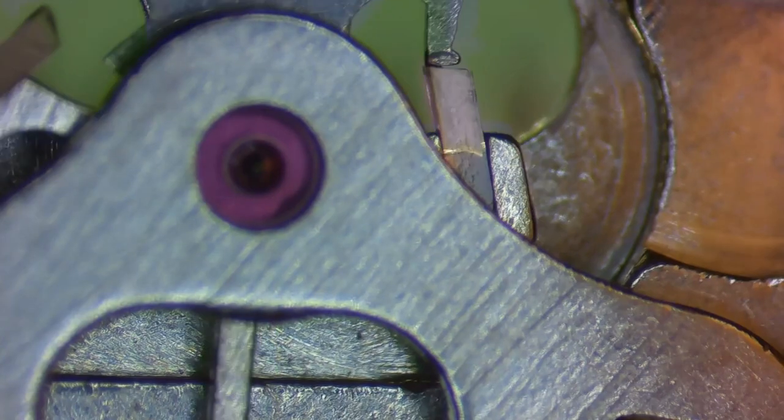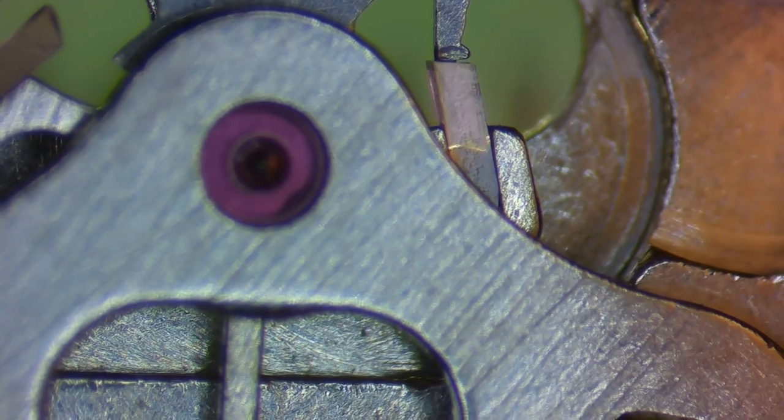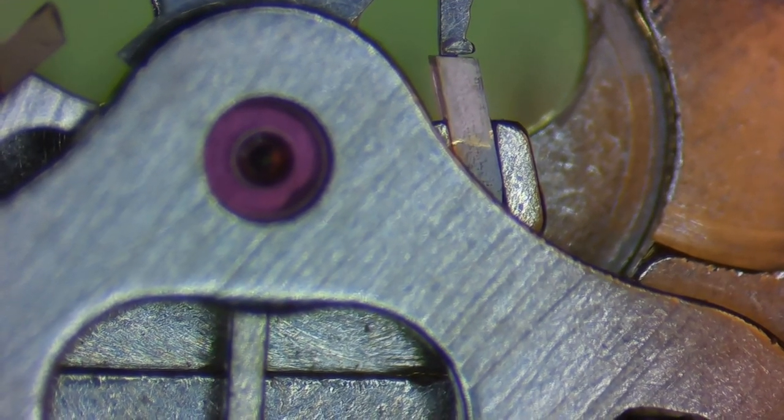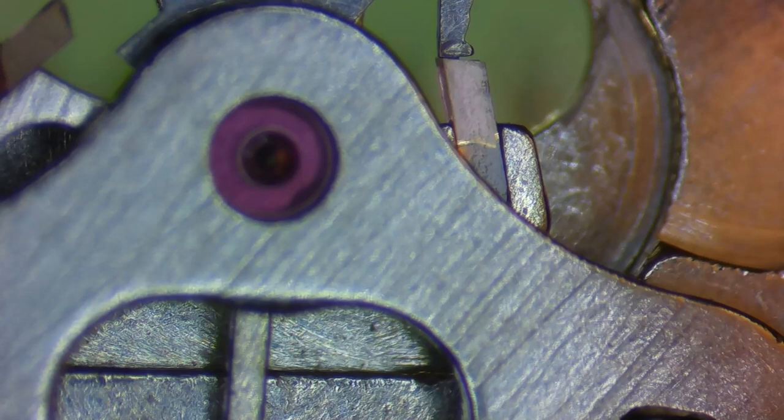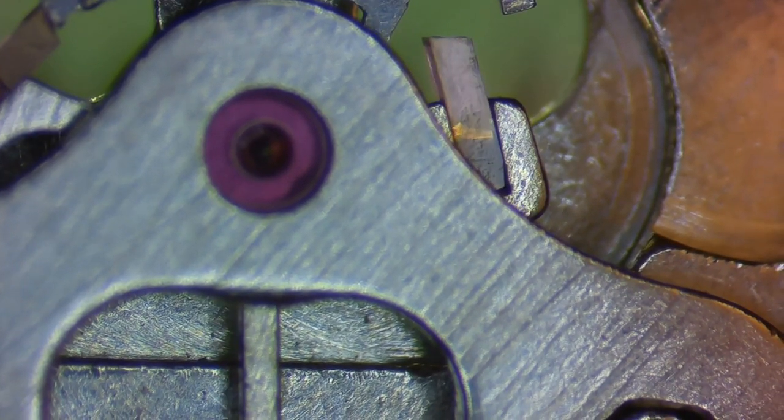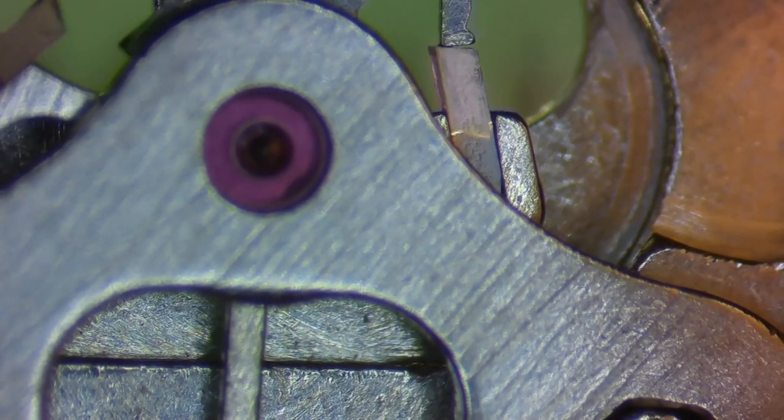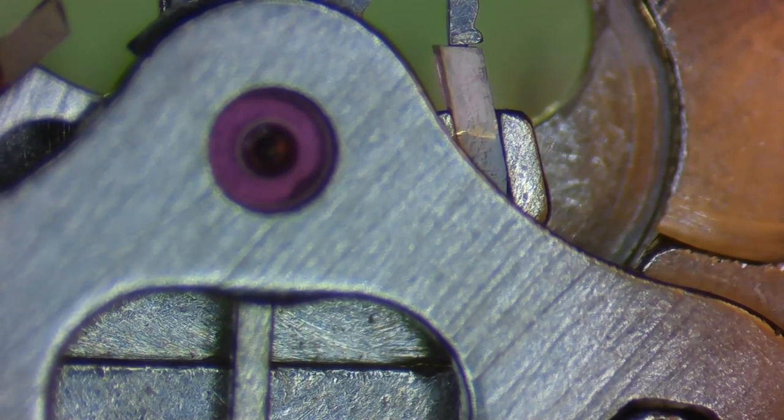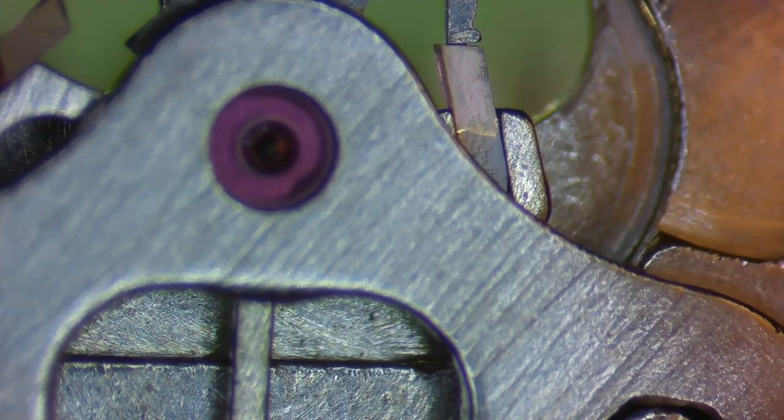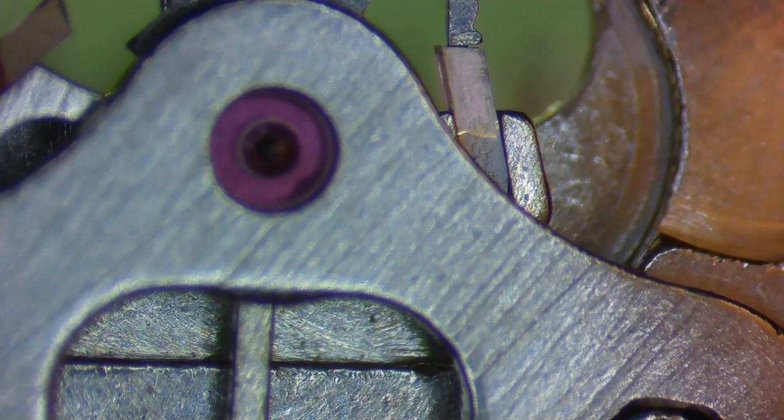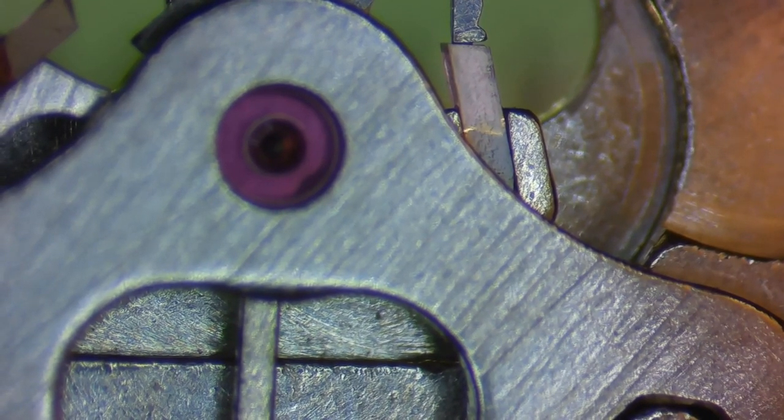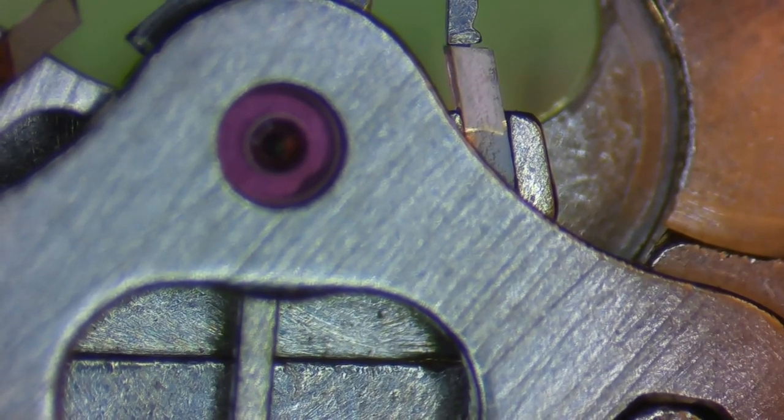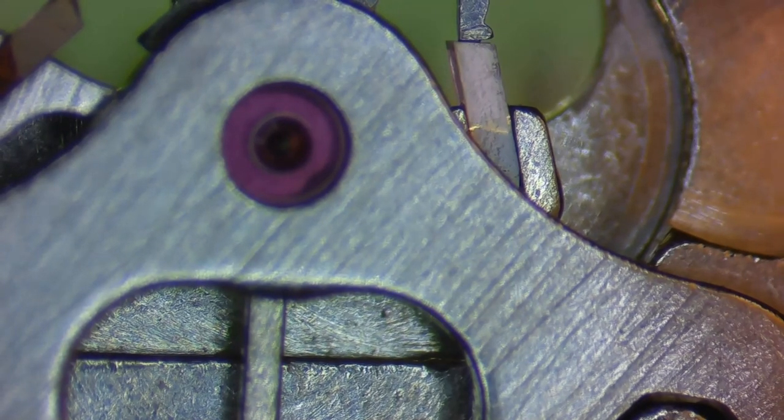All right, here we go. Now, so again, we're looking at 50 to 75 percent of the width of the escape wheel tooth when it's sitting about three-quarters of the way across the pallet jewel. And now this is looking a lot better. This is looking more like it should.